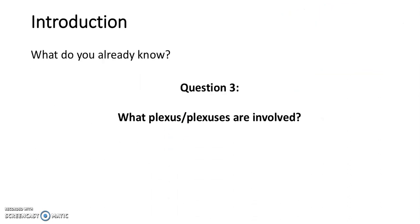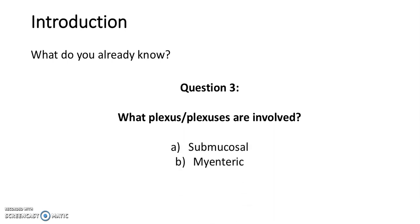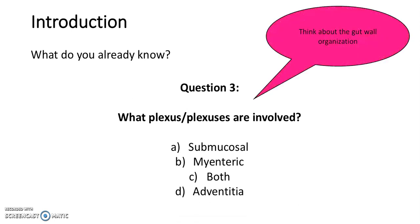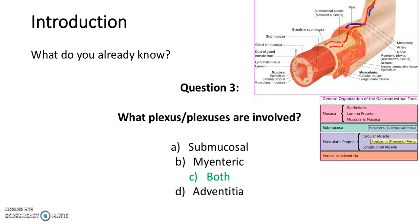Question 3: What plexus or plexuses are involved? A. Submucosal. B. Myenteric. C. Both. Or D. Adventitia. Think about the gut wall organisation. The answer is C — both.